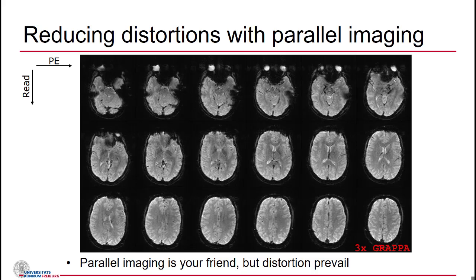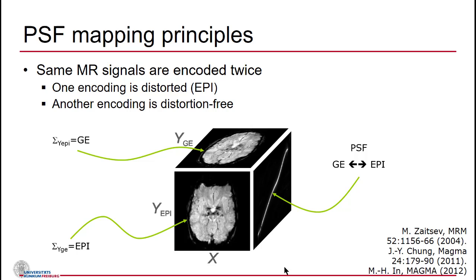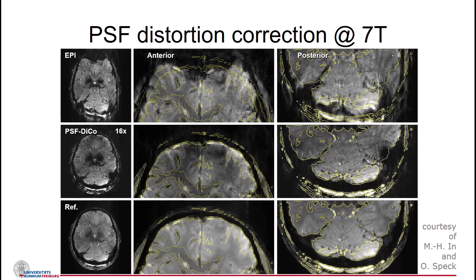Our preferred correction method is based on point spread function mapping. We take the echo planar readout and preface it differently to create a single dataset encoded twice — once with echo planar encoding suffering from all distortions, and a second time with gradient echo spin-warp encoding. Looking at this dataset from the side, you can see how pixel locations connect together. You can reconstruct very accurate shift maps, and recent improvements show excellent match between contours from gradient echo and echo planar images, even at seven Tesla.